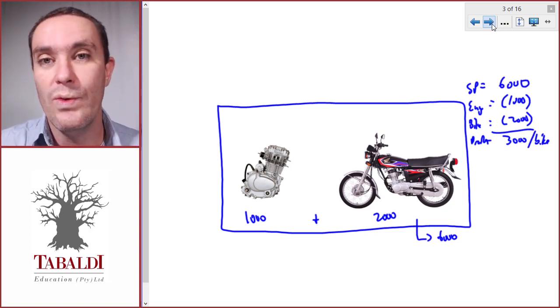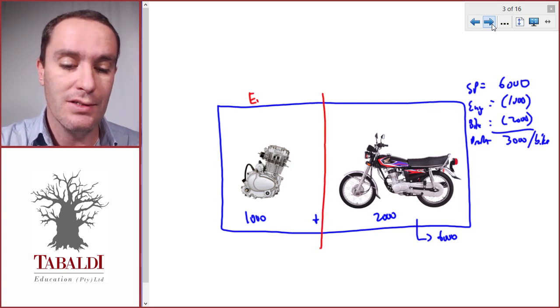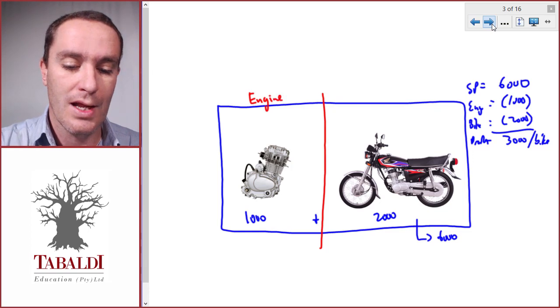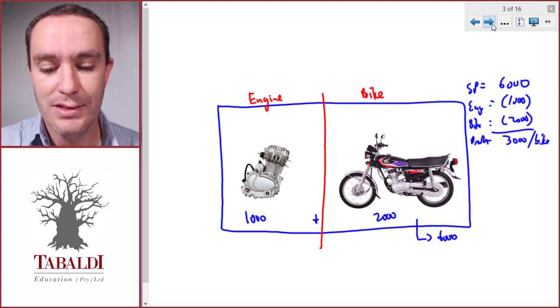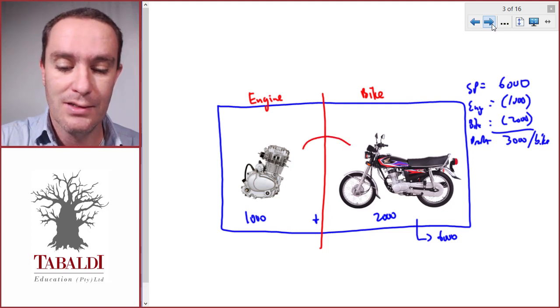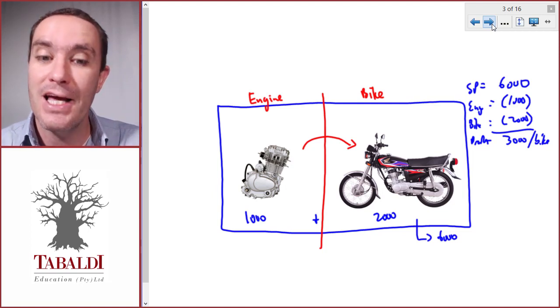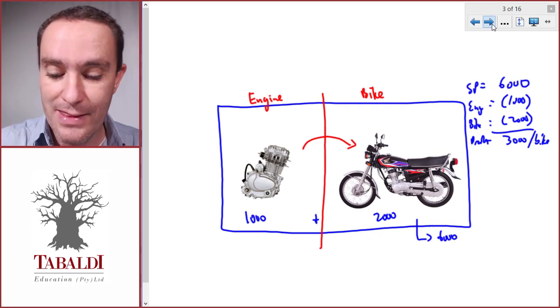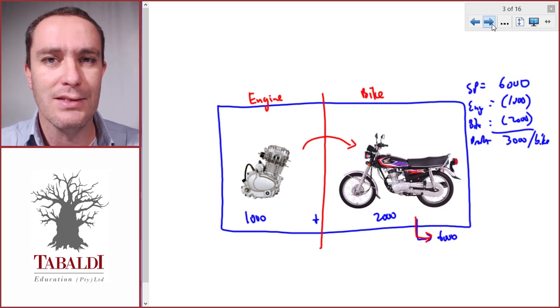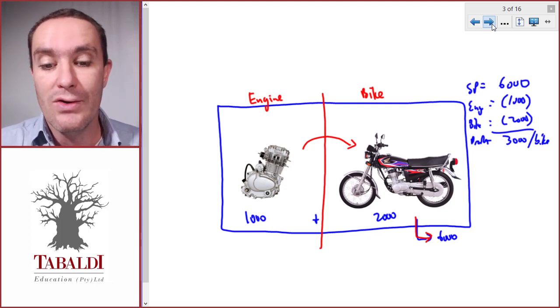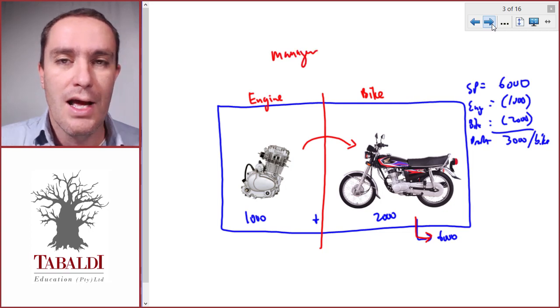Now let's say this is a big company split into two divisions: an engine division and a bike division. The engine division only makes the engines and transfers them to the bike division. The bike division makes the rest of the bike, fits the engine they received from the engine division, and sells it to outside customers. The costs stay the same and the selling price is still the same.